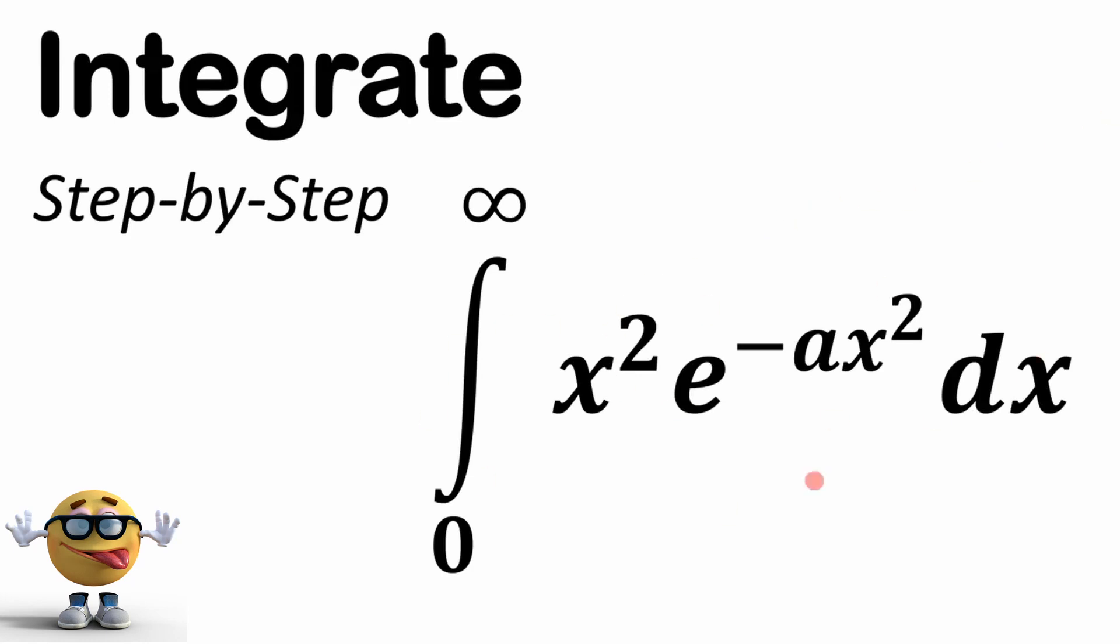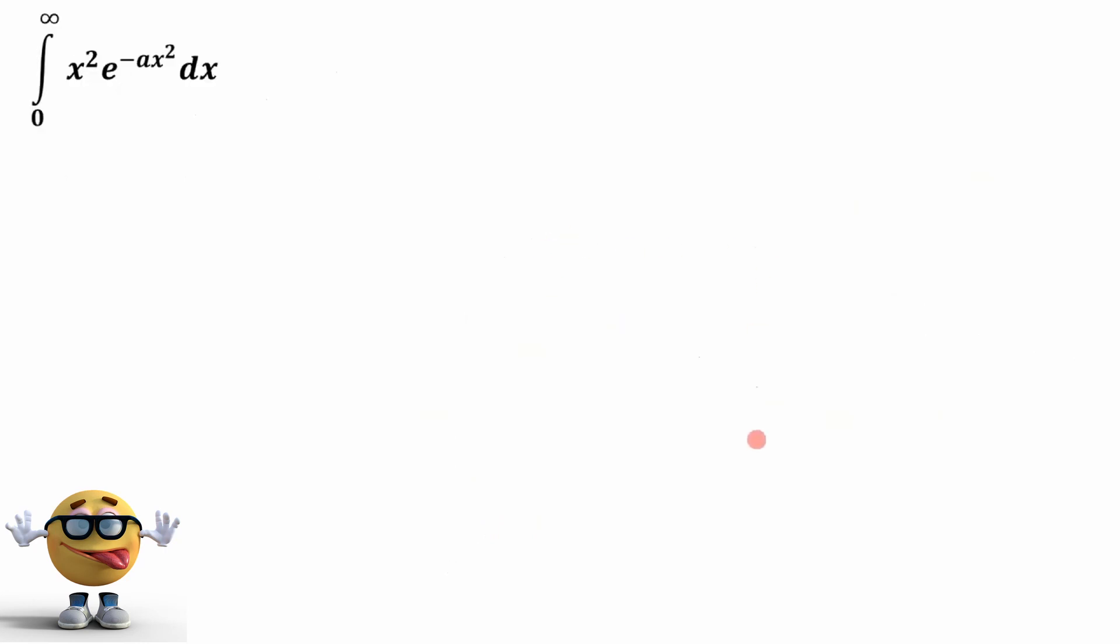Alrighty gang, we're going to evaluate this integral x squared times e to the negative ax squared from 0 to infinity. It's going to be short, it's going to be awesome, and just note I got many modifications of this integral so you can check it out.